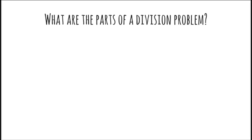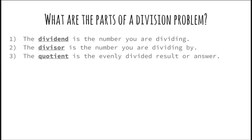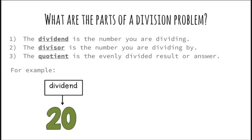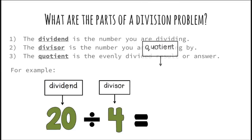First of all, what are the parts of a division problem? The dividend is the number you are dividing. The divisor is the number you are dividing by. And the quotient is the evenly divided result or answer. So, for example, we have 20 for the dividend divided by 4 for the divisor, which equals 5, the quotient.